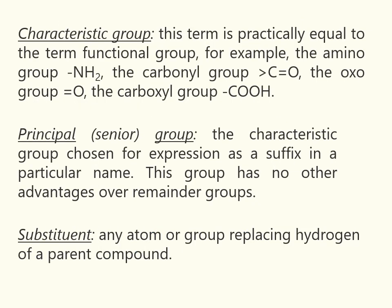The next term is characteristic group, which is practically equal to the term functional group. For example: the amino group, the carbonyl group, the oxa group, the carboxyl group. Principal group is the characteristic group chosen for expression as a suffix in a particular name. This group has no other advantages over the remaining groups.